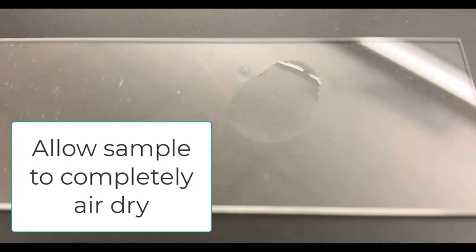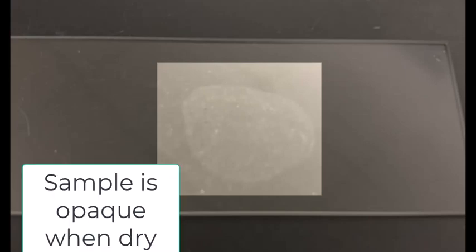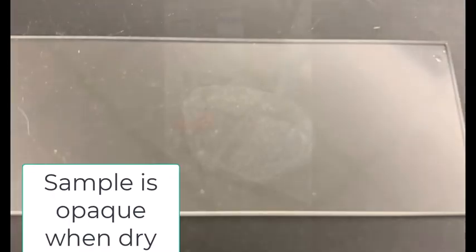Whether you were working from a broth culture or an agar culture, you should now see a thin, even film, the area about the size of a dime on your slide. You'll need to allow that to thoroughly air dry. You'll know it's dry when it takes on an opaque look.